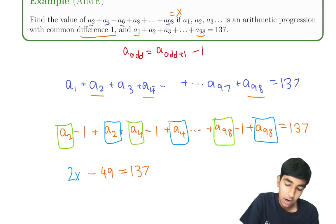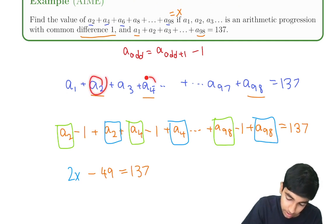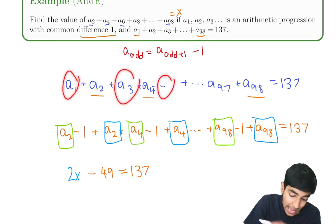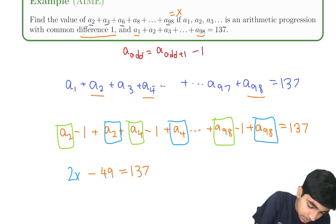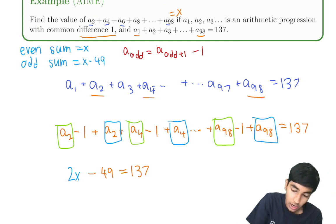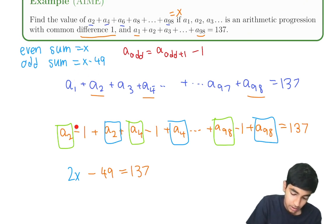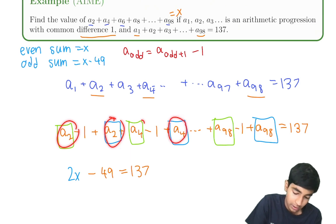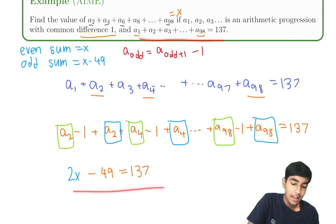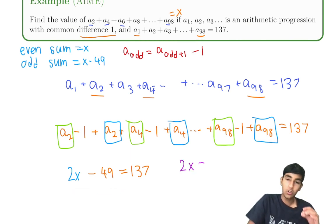To recap: the sum of the even terms is x, and the odd terms sum to x minus 49, because each odd term equals the next even term minus 1. So the total sum expressed in terms of x is 2x minus 49 equals 137. Solving, 2x equals 186, so x equals 93. The answer is 93.